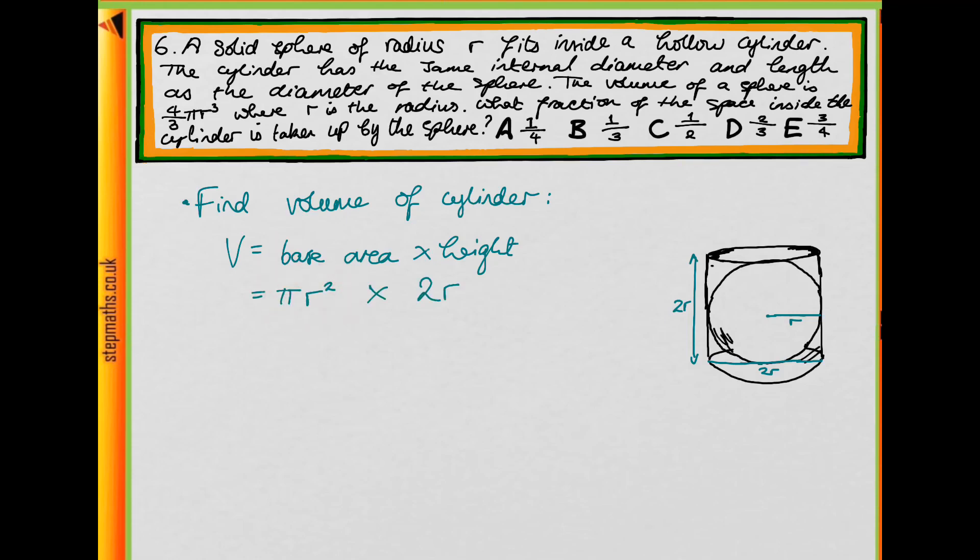The base area is πr² and the height is 2r. So we get that the volume of the cylinder is 2πr³.